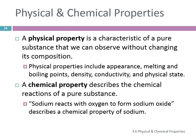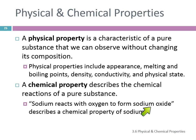A chemical property is something that describes the reactions of a pure substance. For example, sodium reacts with oxygen to form sodium oxide — that describes a chemical property. When we observe that chemical property, the sodium and the oxygen are no longer there and we have sodium oxide; the particles have changed. So a chemical property, when we describe or observe it, involves the particles changing through a reaction.